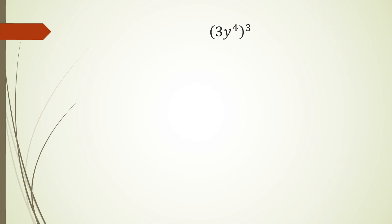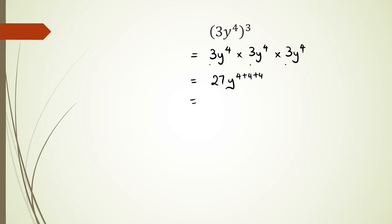Now let's throw a number in the mix. If we expand this out, we're going to get three y to the power of four, multiplied by three y to the power of four, multiplied by three y to the power of four. At this point we have three multiplied by three multiplied by another three: three times three is nine, nine times three is 27. And of course we have y to the power of four plus four plus four, so we get 27y to the power of 12.